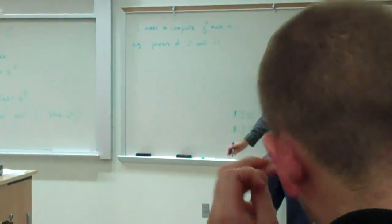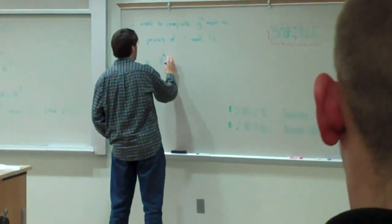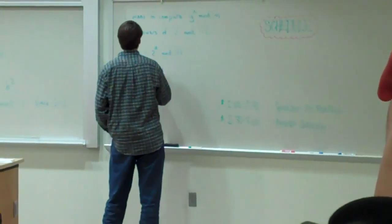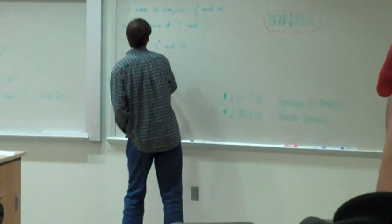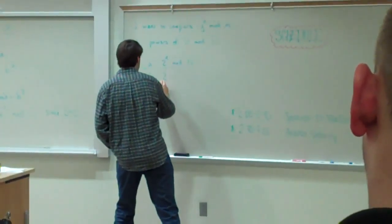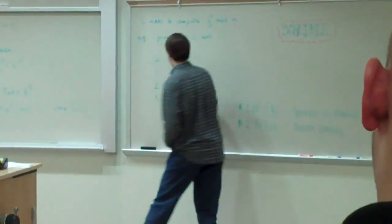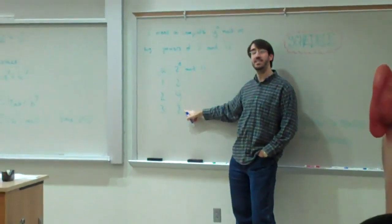So, if I look at powers of 2 mod 11, here's going to be my A, here's 2 to the A mod 11. So, I start with A equal to 1, and 2 to the first power is 2. If A is 2, then 2 squared is 4. If A is 3, 2 to the third power is 8. I took 4 times 2, and I got 8.